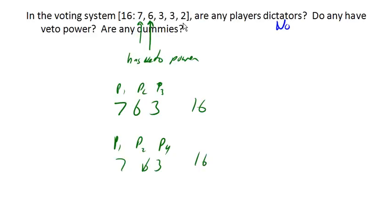Right? They're interchangeable. And so neither of them is essential to being able to reach quota. So neither of them has veto power.